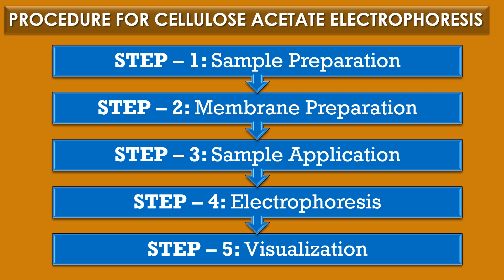The procedure for cellulose acetate electrophoresis has five steps. First, sample preparation: the sample containing the charged molecules is dissolved in a suitable buffer solution. Second, membrane preparation: a cellulose acetate membrane is soaked in the same buffer solution. Third, sample application: a small amount of sample is applied to a specific point on the membrane. Fourth, electrophoresis: the membrane is placed between two electrodes and an electric current is applied. Fifth, visualization: the separated molecules are visualized using stains or other detection methods.